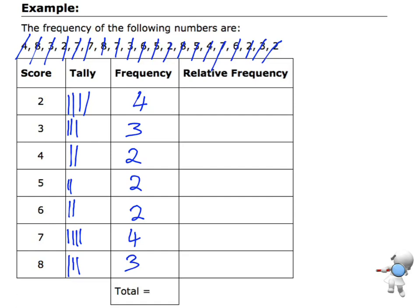Now if I add all of those up: 4 plus 3 is 7, plus 2 is 9, plus 2 is 11, plus 2 is 13, plus 4 is 17, plus 3 is 20. So that's giving me a total of 20. That tells me there were 20 pieces of data originally.